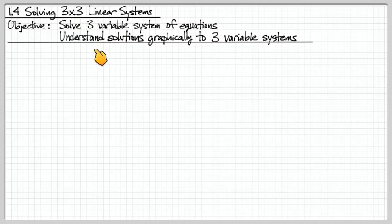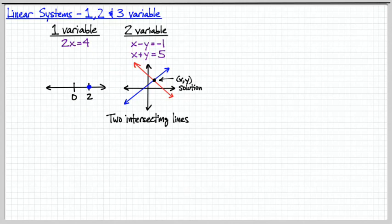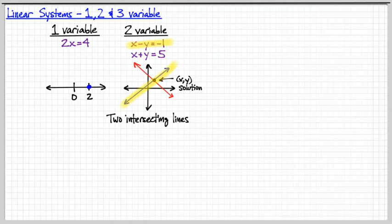I also want you to understand, just from a graphical standpoint, what does it mean and what does it look like. Let's start by looking at linear systems, beginning with the simple case of one variable — represented by a single point on a number line. As we move to two variables, one equation is represented by this blue line, where all the points on the blue line satisfy that equation. Similarly, all the points on the red line satisfy the other equation. The place where they intersect is the point that solves both equations, and we call that our solution to the two-variable, two-equation system.